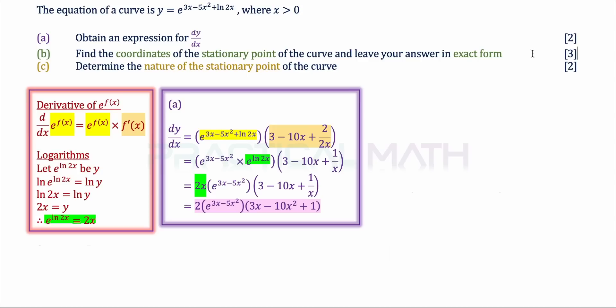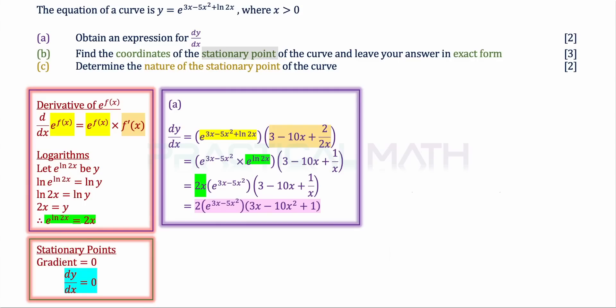For part B, we are told to find the coordinates of the stationary point and leave the answer in exact form. At a stationary point — whether maximum, minimum, or inflection — the gradient equals zero, meaning the tangent is a perfectly horizontal line. So we set dy/dx equal to zero, using the simplified expression from part A.